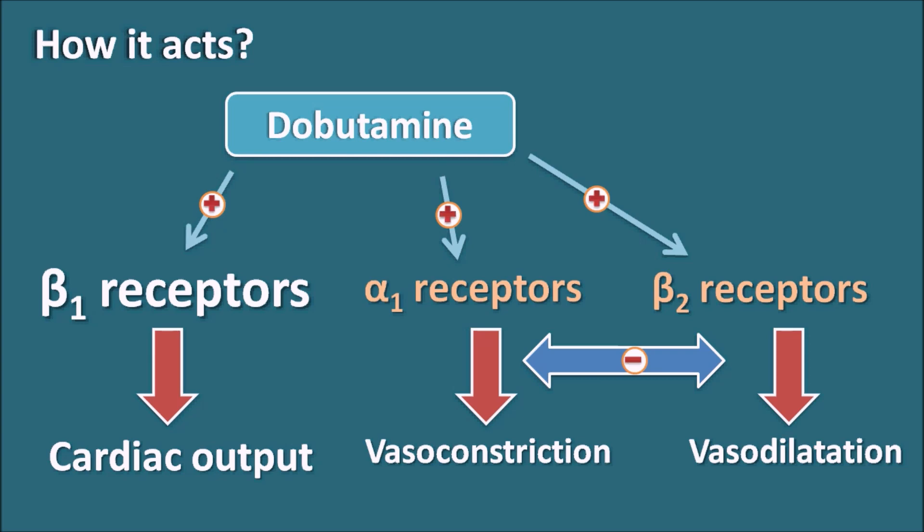But as the Dobutamine dose is increased to higher doses, because of the increased effect on alpha-1 receptors as well as increased rate of contraction, we can observe a slight increase in blood pressure.